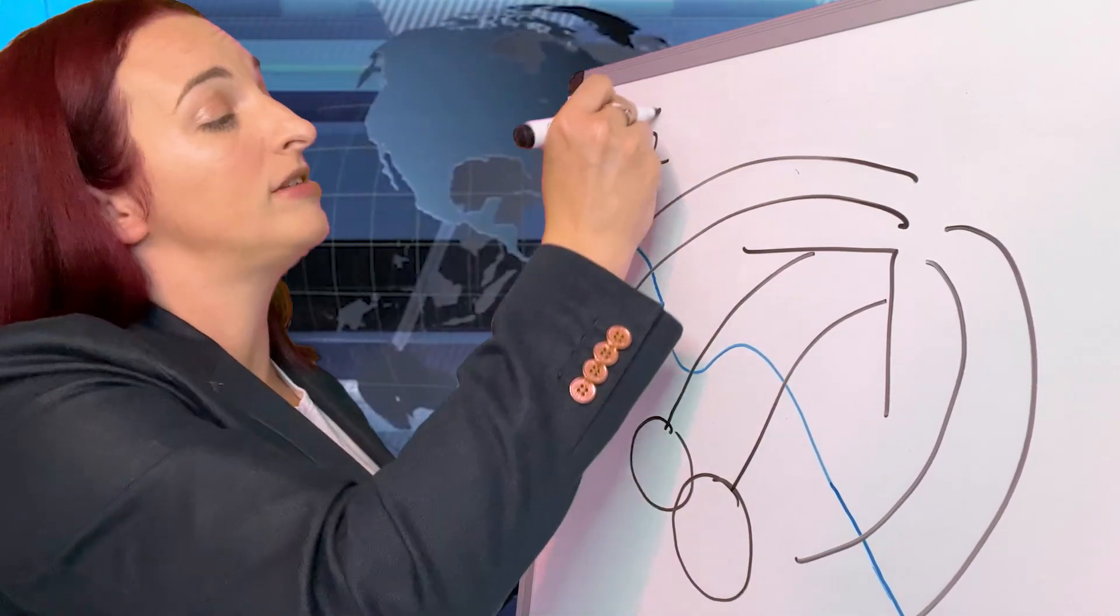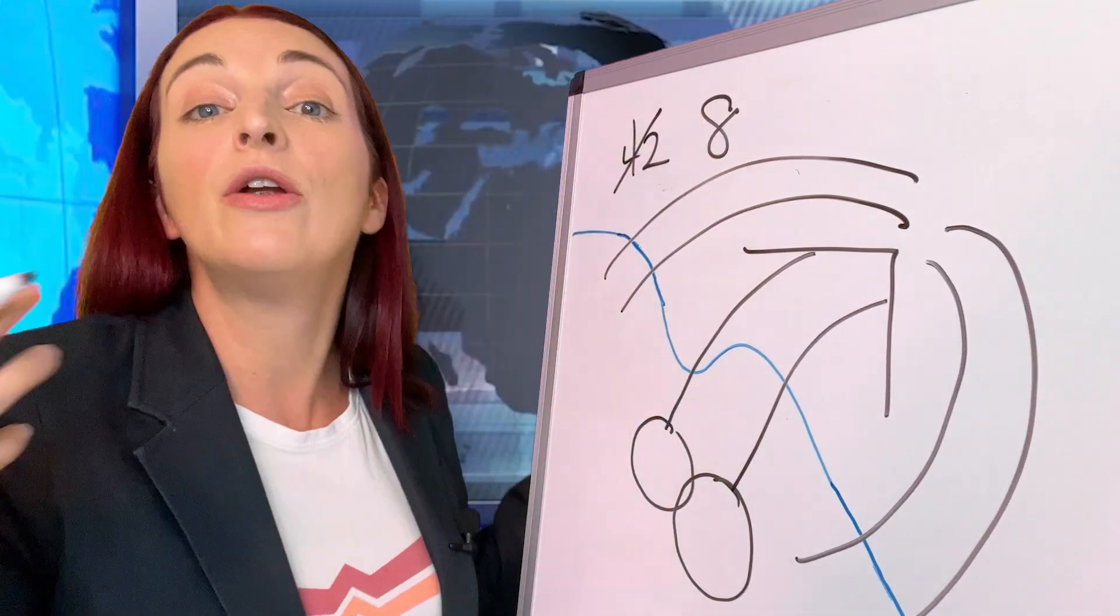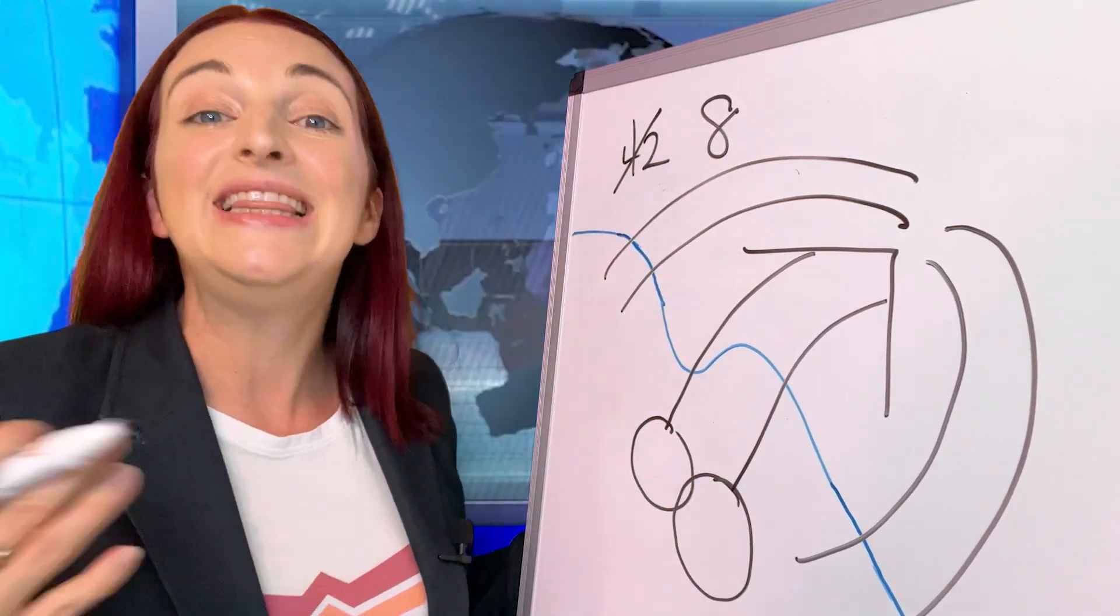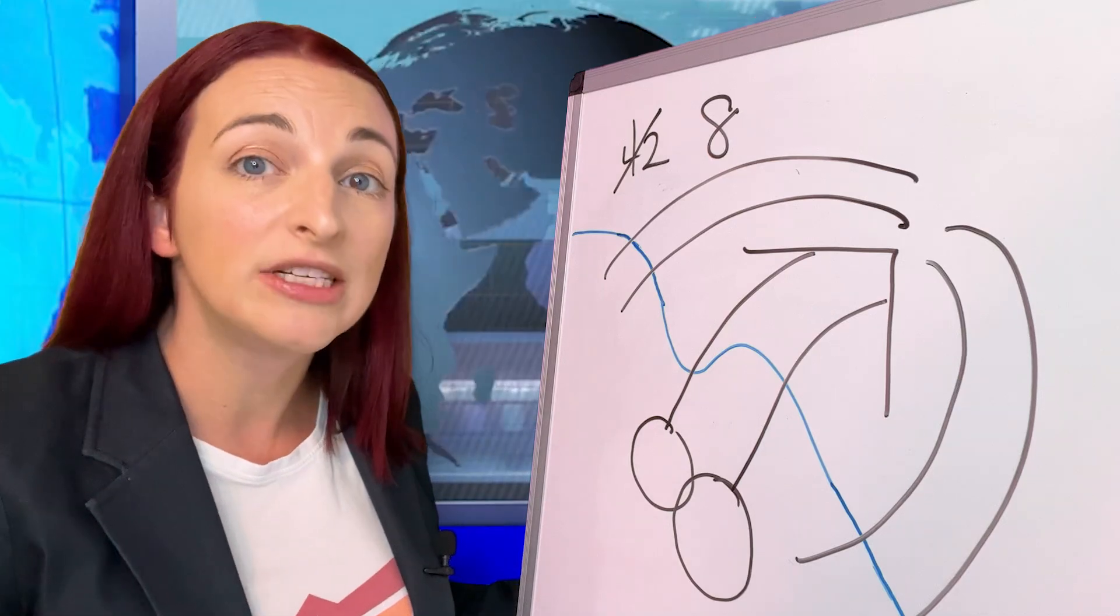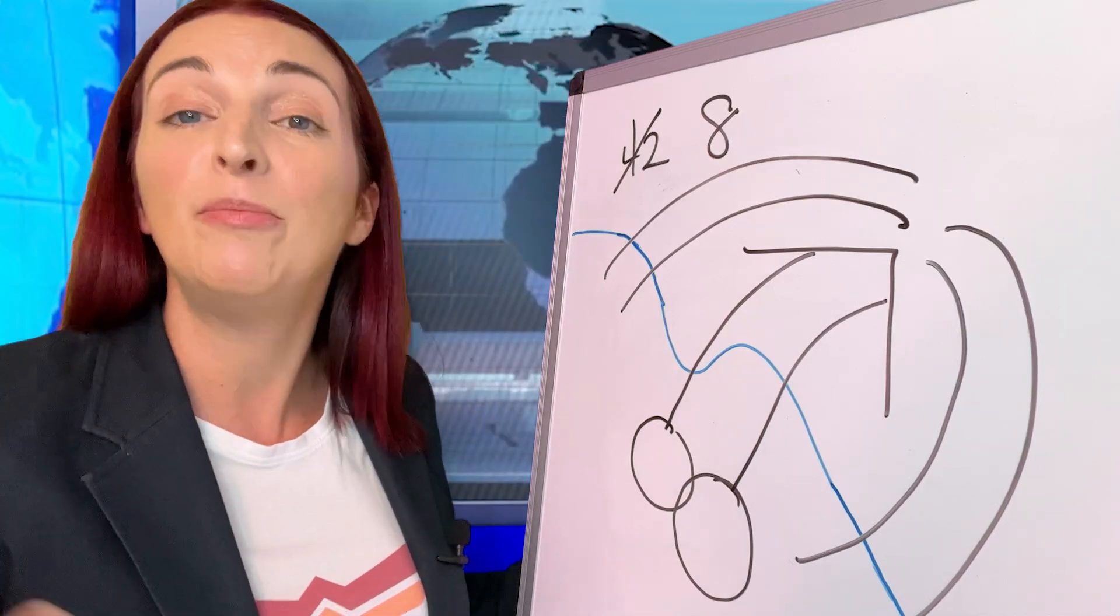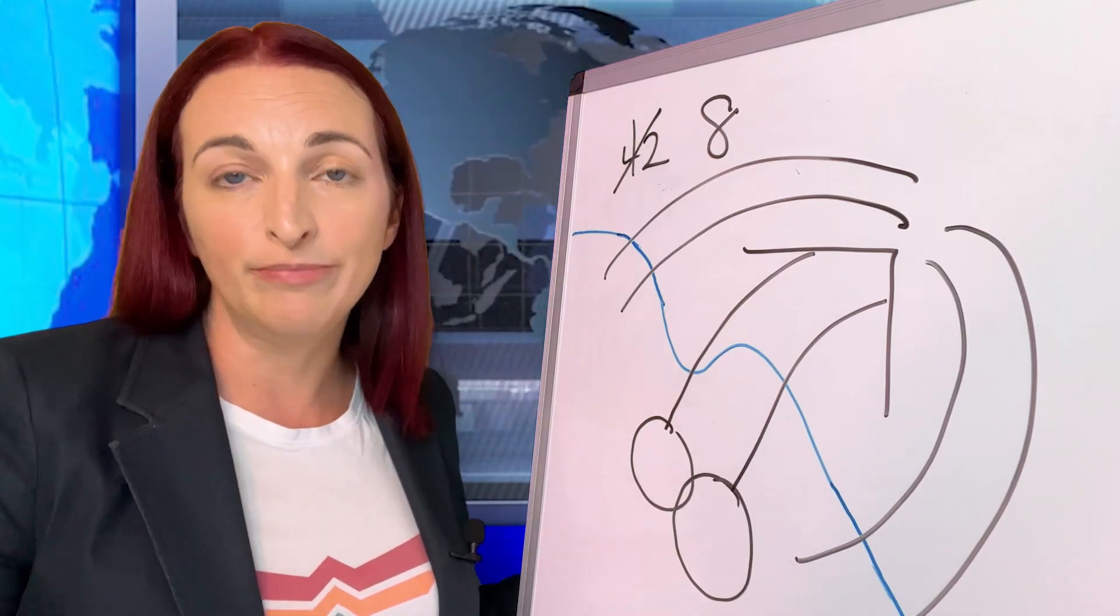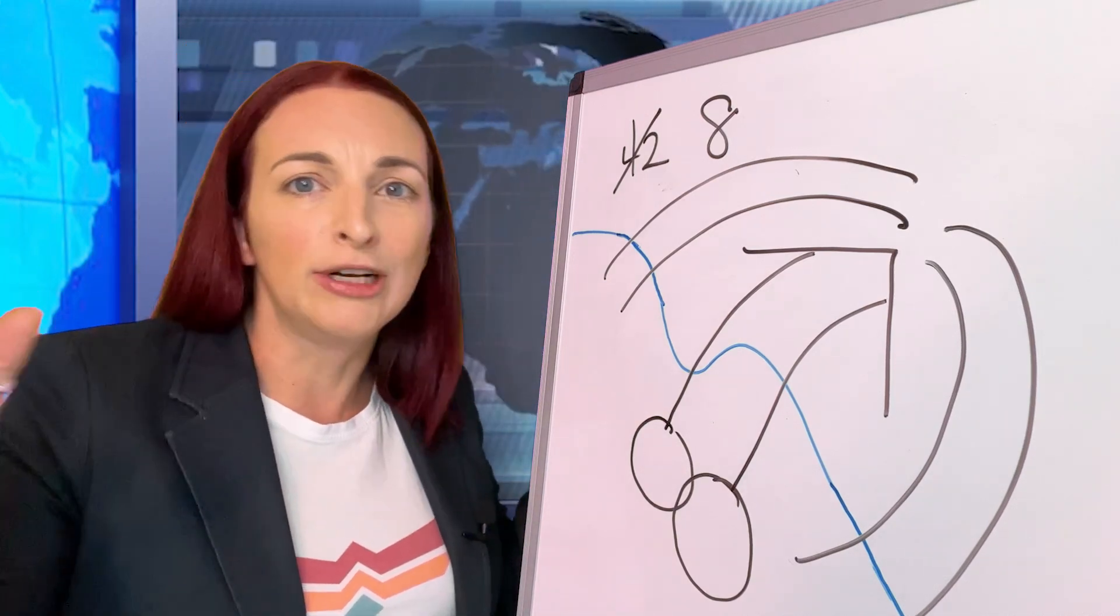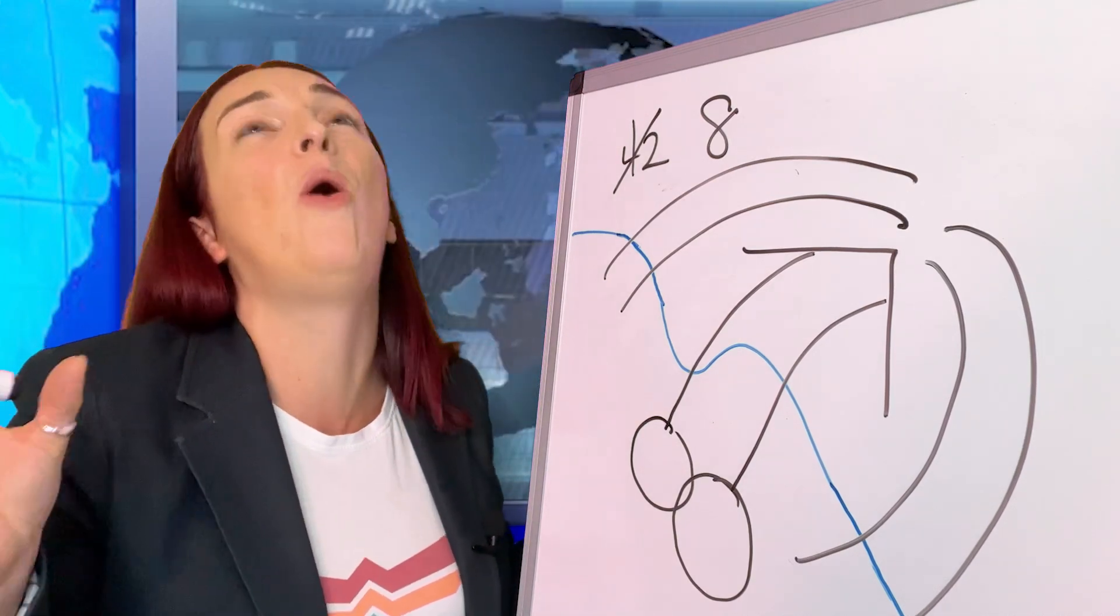Biden has changed the policy to Title 8, or the pre-pandemic policy. This means that there may be harsher penalties for illegal border crossings, but a fairer process. Or it would be if we had the legal infrastructure to actually handle it, which, boy, we sure don't.